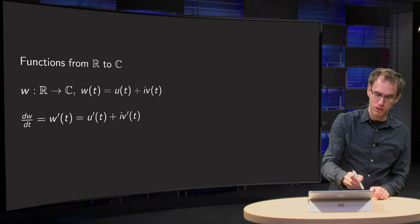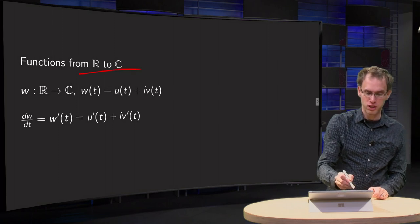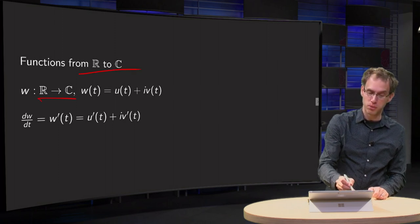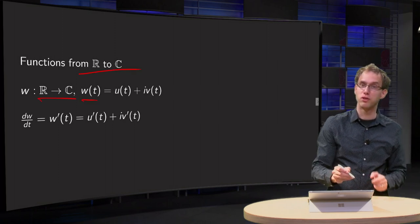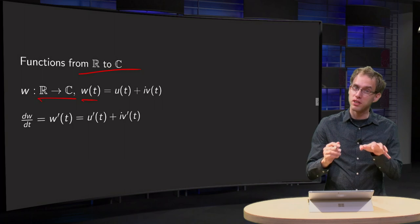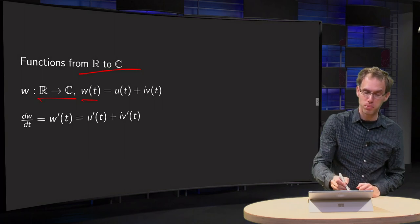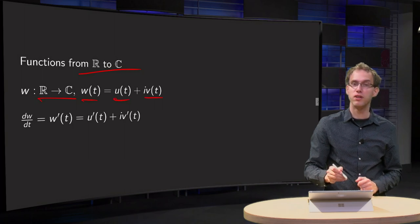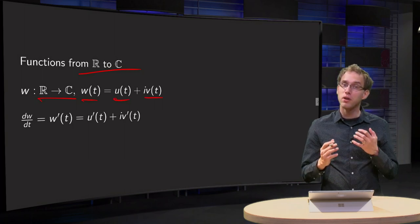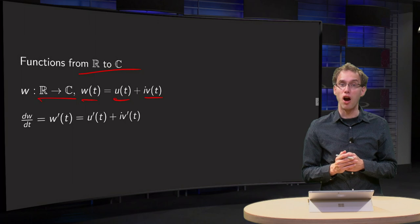We look at functions from R to C: W from R to C. W as a function of T, split into real and imaginary parts as u plus i times v of T, where T is just in R.